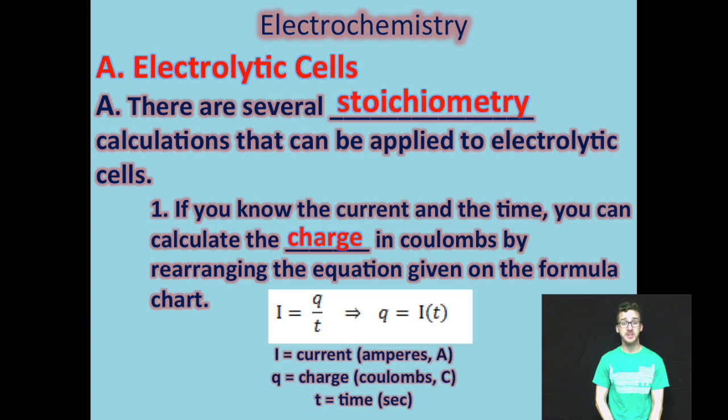So there are several stoichiometry calculations that can be applied to electrolytic cells. Again, remember that electrolytic cells take advantage of a redox reaction, albeit thermodynamically unfavorable, but still a redox reaction. So we're focused a lot on the movement of electrons, the gain and loss of electrons. And it turns out there's an amazing formula given to you on your screen, in your notes and on your formula chart that relates the charge in coulombs, which again, is related to our electrons per time in seconds. So how much charge in terms of electrons have flowed in a given amount of time?